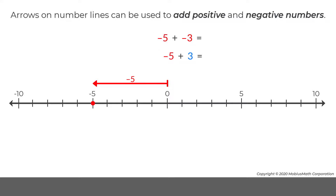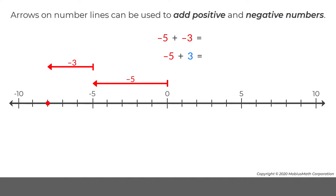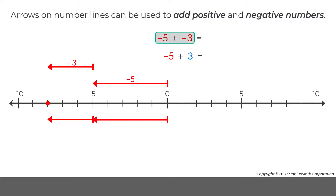To represent negative 5 plus negative 3, an arrow to represent negative 3 is drawn starting at negative 5. This arrow is in the negative direction and has a length of 3. These two arrows combine to represent negative 5 plus negative 3 equals negative 8.